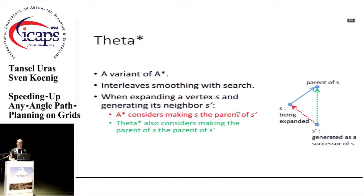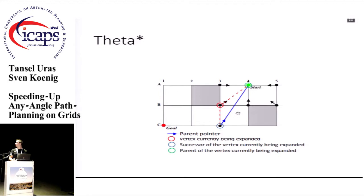A-star considers two possibilities for the parent: the current parent of the generated vertex, or the vertex being expanded. Theta star considers a third possibility: the parent of the vertex being expanded. For example, the red vertex is being expanded, the blue vertex is the successor, and the green vertex is the parent of the expanded state. A-star would set the parent of the blue vertex to the red vertex. But Theta star performs a line-of-sight check between the blue and green vertices, and since it succeeds, it sets the parent to the green vertex and updates the G value accordingly, resulting in a more informed G value that helps find shorter any-angle paths.